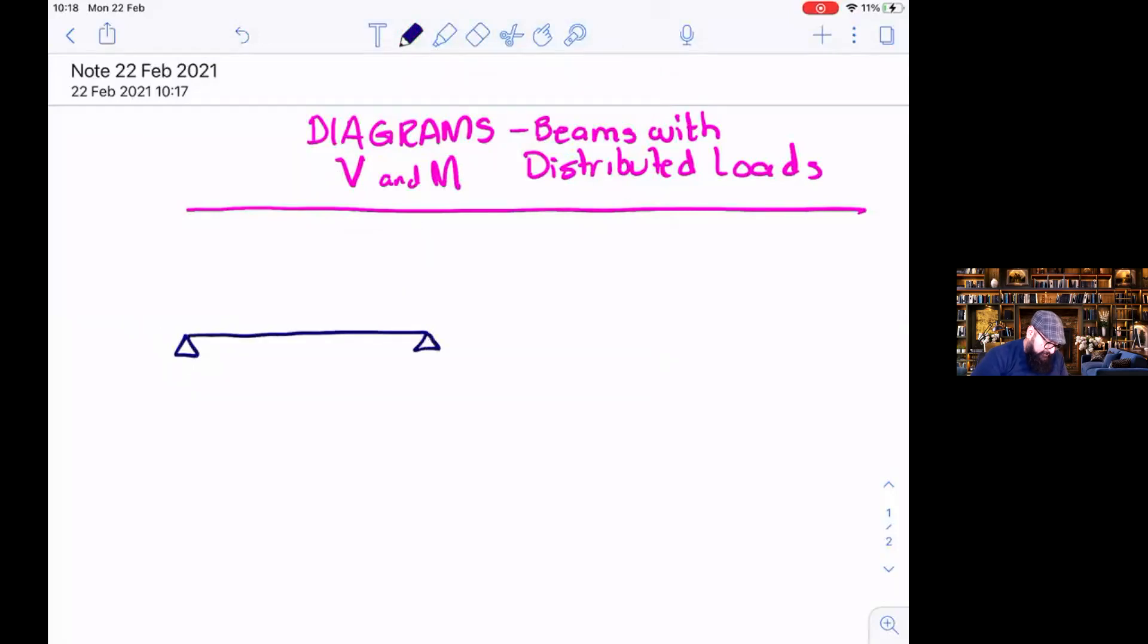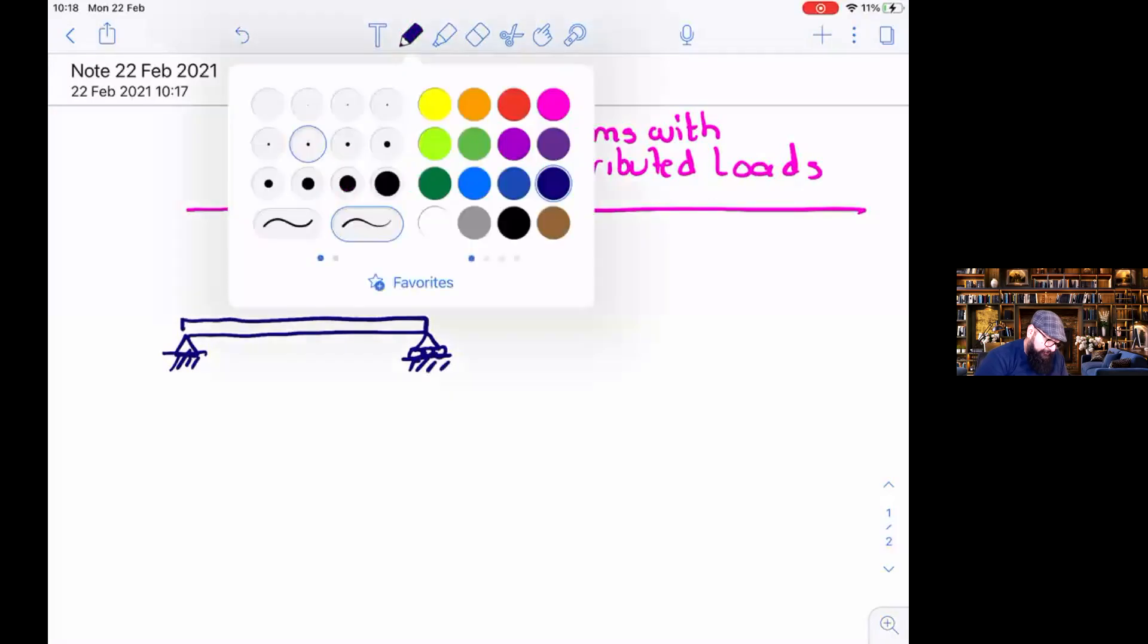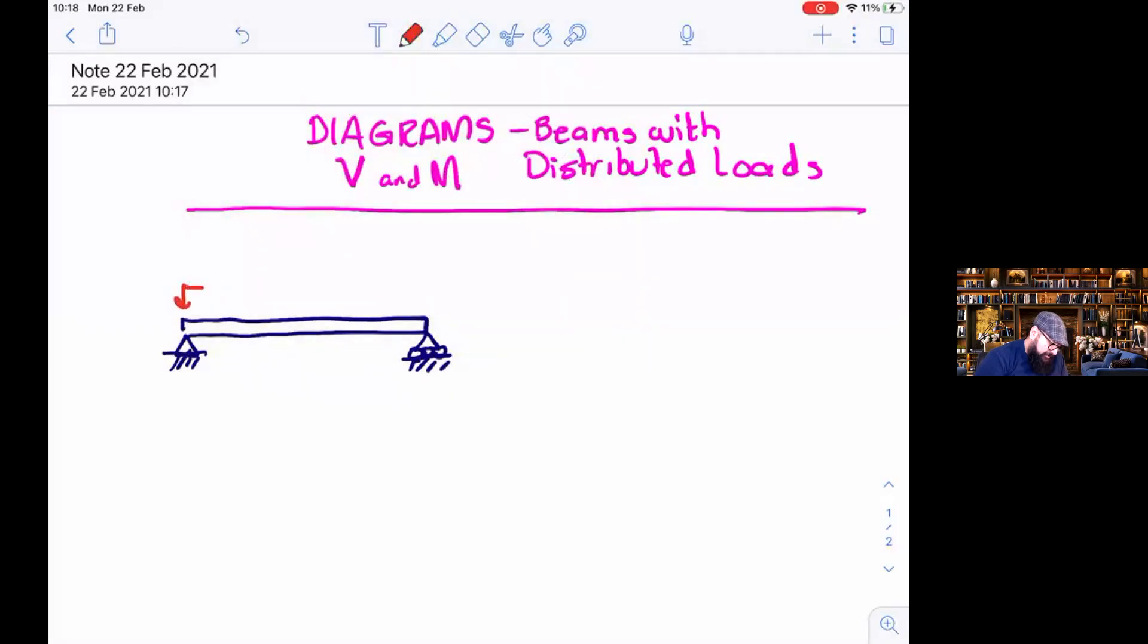For beams, we may have two main types of distributed loads. The uniformly distributed load - this one is uniform, same value in all the distance of the load. This is called uniform load, distributed load.